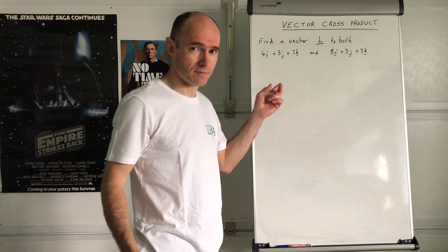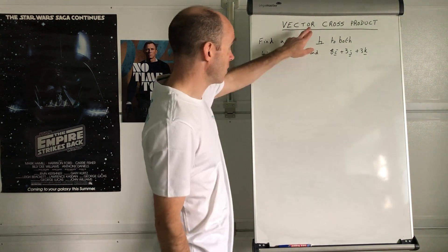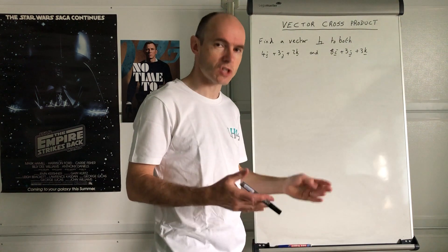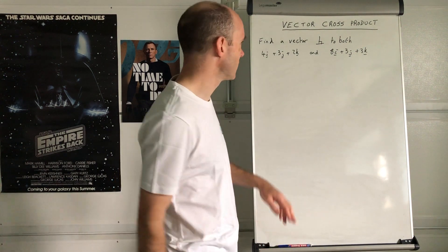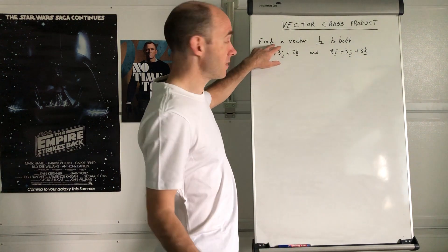Here's the example using the vector cross product. Sometimes it's called the vector product, sometimes just the cross product. Simple question: find a vector that's perpendicular to both these vectors.